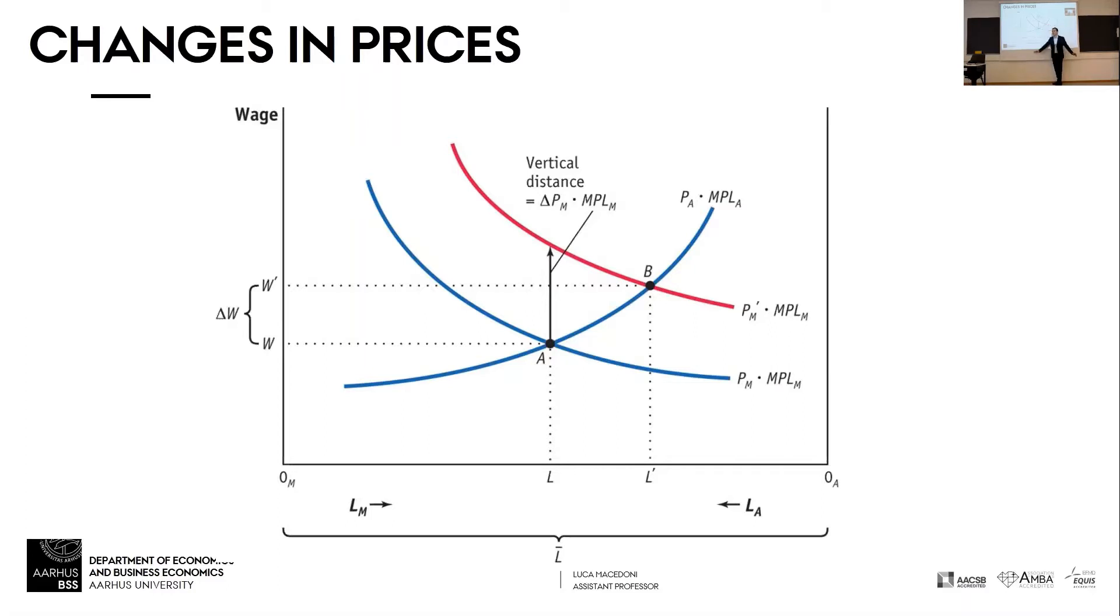What about the manufacturing goods? Can you buy more of the manufacturing goods? No, you can't. Because the price of manufacturing increases more than the increase in the wage. Why is that? So follow me. Look at the graph for a second. The change in the wage is W to W prime. This segment is the change in the wage. But we said that the change in the price is equal to the vertical shift of the labor demand in manufacturing. So it's the distance between the blue labor demand curve and the red labor demand curve in manufacturing. And this distance is higher than the change in the wage. And so if you're a worker, you're going to be able to consume only less of manufacturing good.